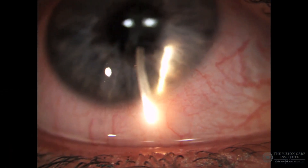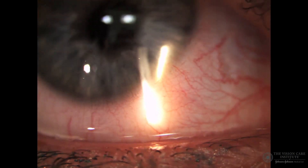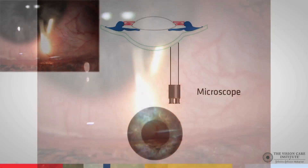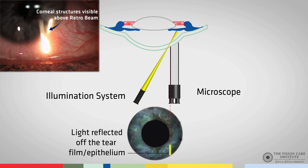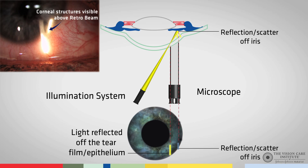We can now start seeing some corneal structures. As this diagram shows, in essence what we are doing is shining the illumination system through the cornea. The majority of the light passes through, but some of it forms the reflected corneal section that we can see here. The majority of the light that passes through strikes the iris and scatters off the iris before illuminating the cornea from behind, forming the blue patch as we see here. If there are any blood vessels or other structures in the cornea at that stage, they will be illuminated from behind and will be visible in the light that we see as a retro beam.